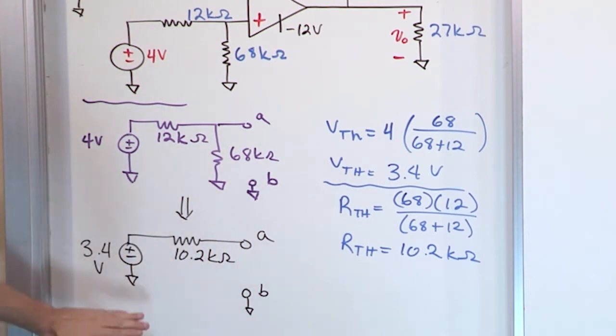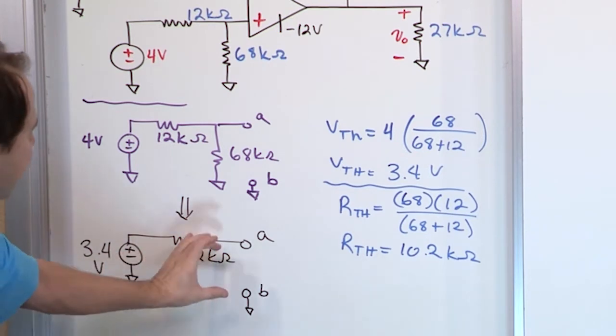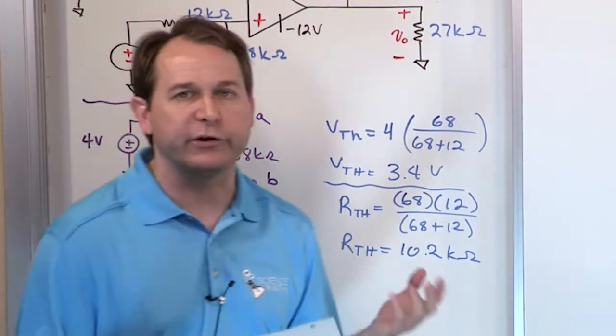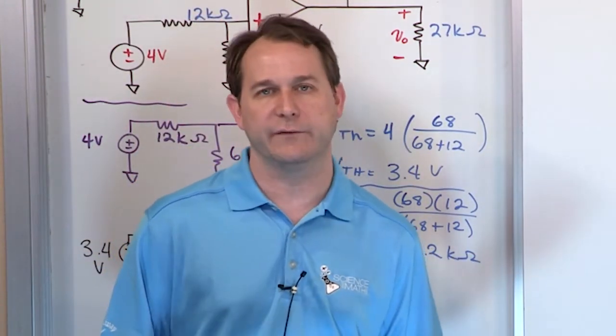Okay, so this guy right here, this 3.4 volts, notice it's different than the 4 volts, but 3.4 with this resistance is you could physically remove this and connect that in its place, and the circuit would behave exactly the same. That's the point of all of this.